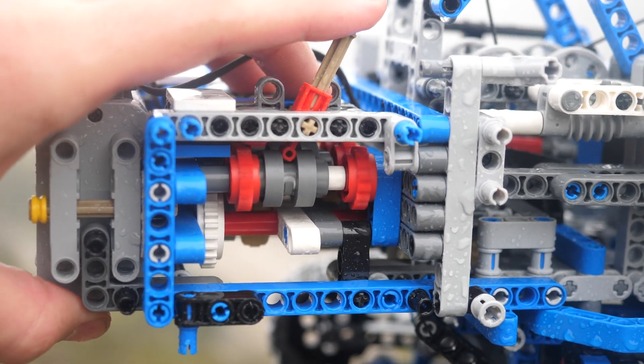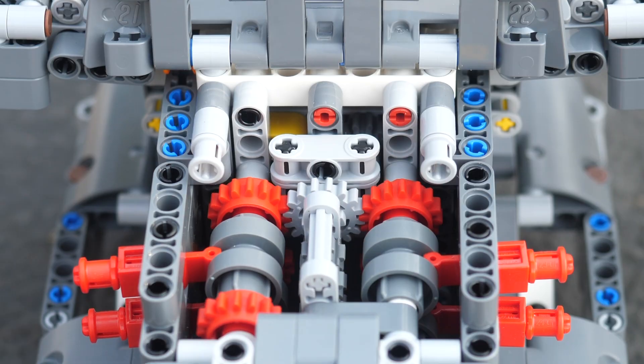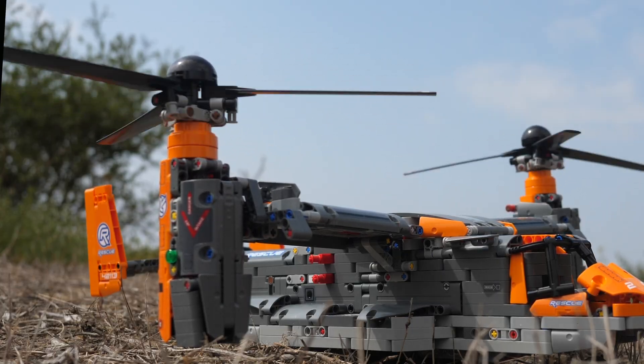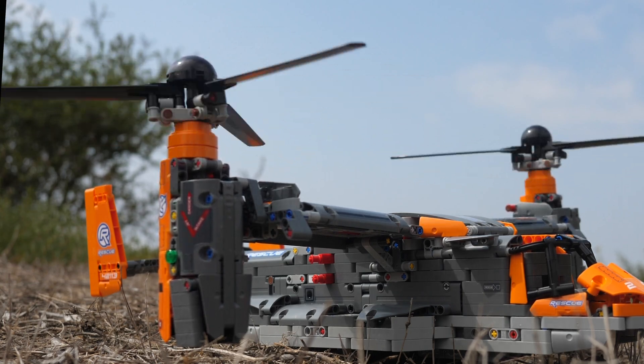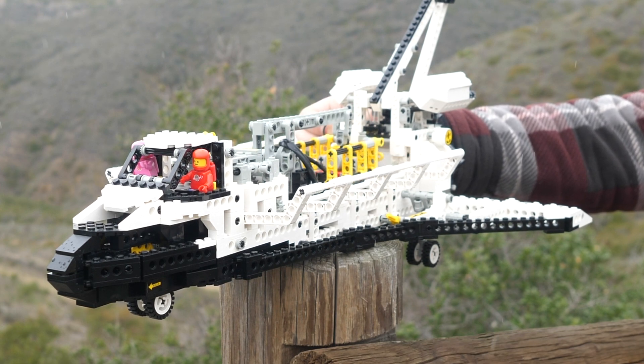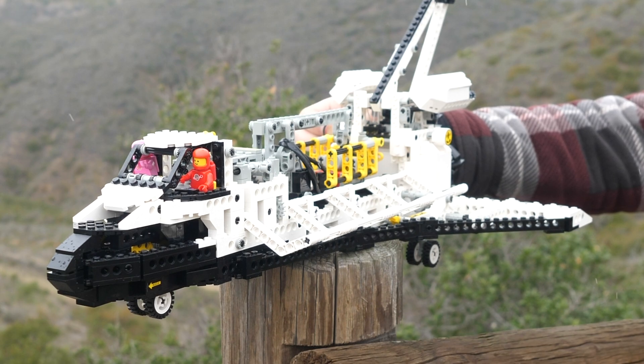Some sets that use the multi-directional gearbox are the bucket wheel excavator, the air race jet, and the last set to use this gearbox is the Bell Boeing V-22 Osprey, which unfortunately got cancelled. The main disadvantage of the multi-directional gearbox is that you have to use double the driving rings for the same amount of functions, and that's just not very efficient.